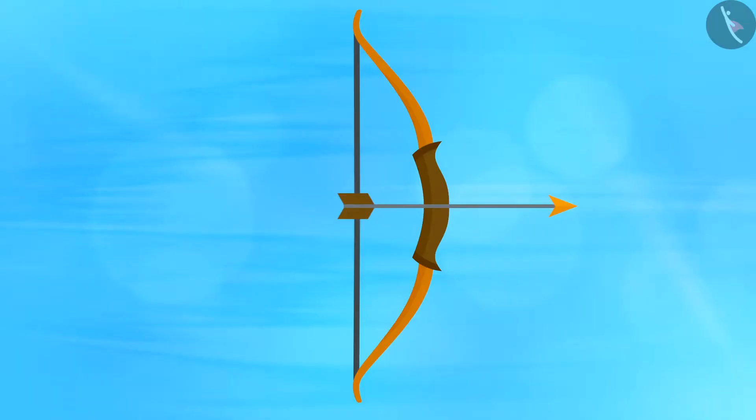Now, take a bow and an arrow. Place the arrow on the bow with one end supported by the string. Stretch the string and release the arrow.